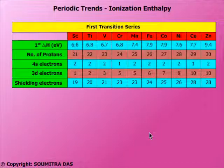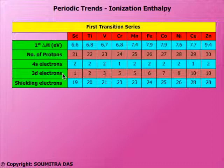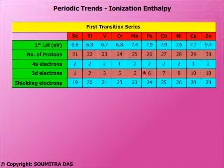Now let us see the ionization enthalpies of the elements of the first transition series, i.e. the D block elements of the fourth period. Here, ionization happens by losing a 4S electron and not a 3D electron, as predicted in the above principle of filling up of electrons. The values are more or less equal because the 4S electron is shielded by 3D electrons. As we move across, there is an increase in proton number as well as an increase in 3D shielding electrons, and these two effects cancel each other.